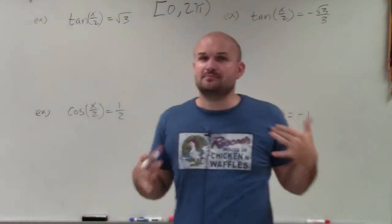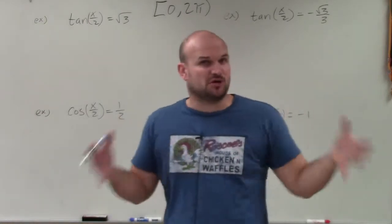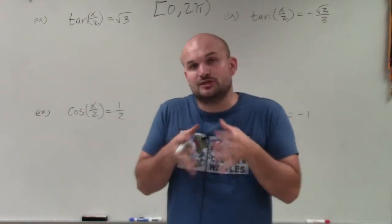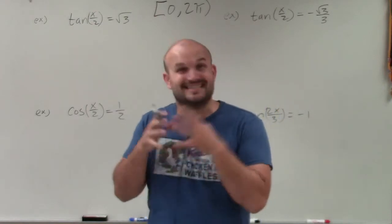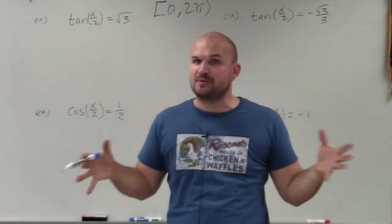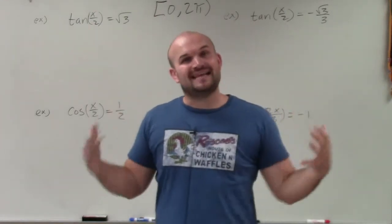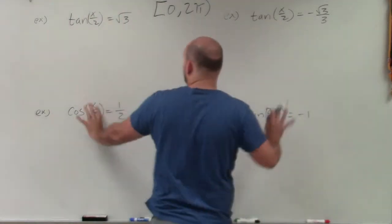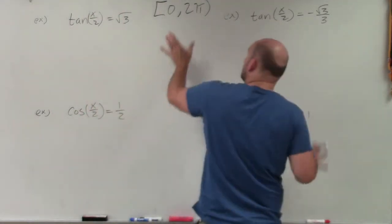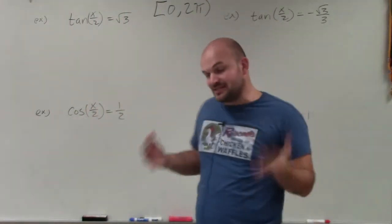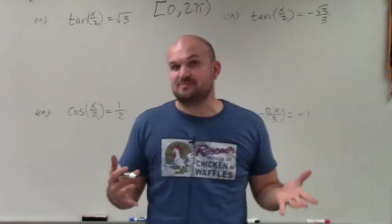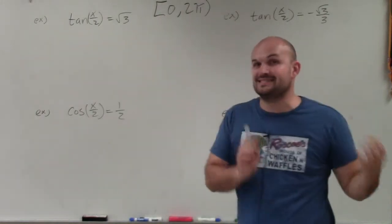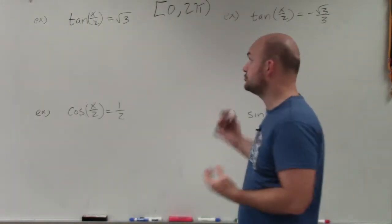Just like how we did multiple angles when they're multiplied by a multiplier like 2 or 3, we're going to treat solving the trigonometric equation exactly the same way. But then at the end, we're going to take into account our multi-angle as well as our constraint, which is the same as the last video — we're only looking for solutions between 0 and 2π.